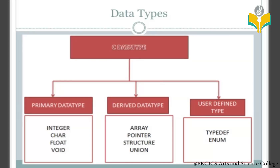To summarize: primary data types include integer, character, floating, and void types. Derived data types include array, pointer, structure, and union. User-defined types are typedef and enum.